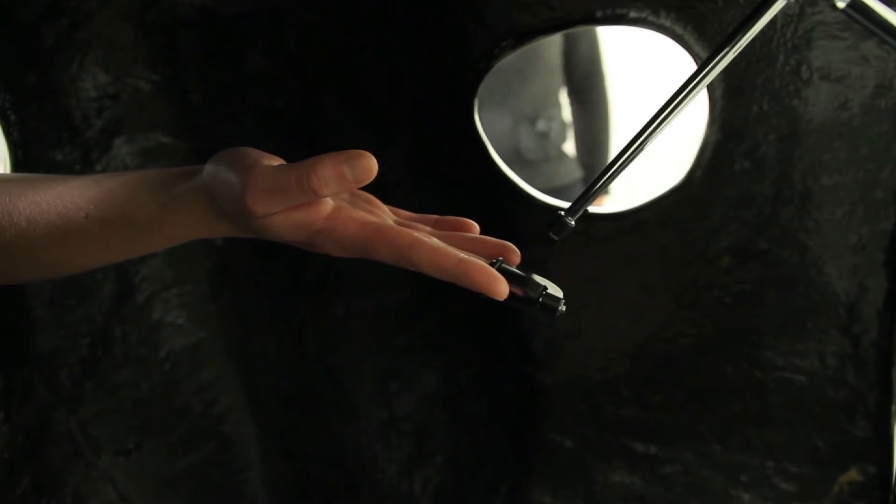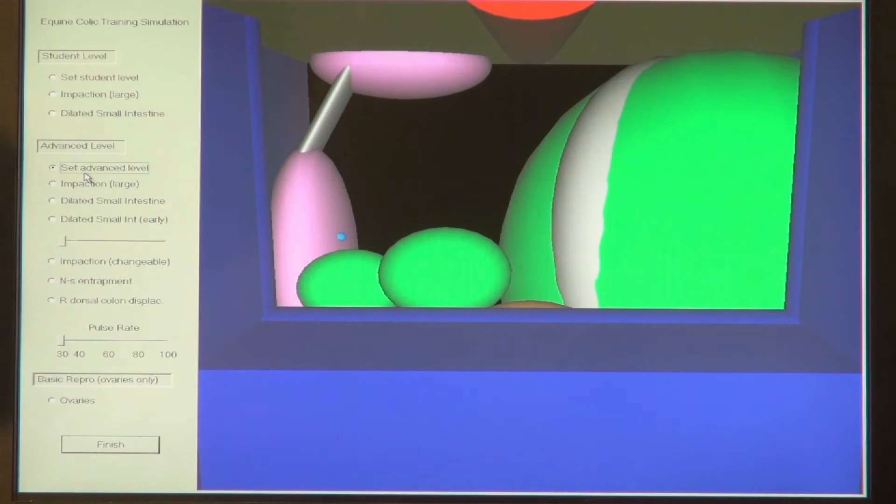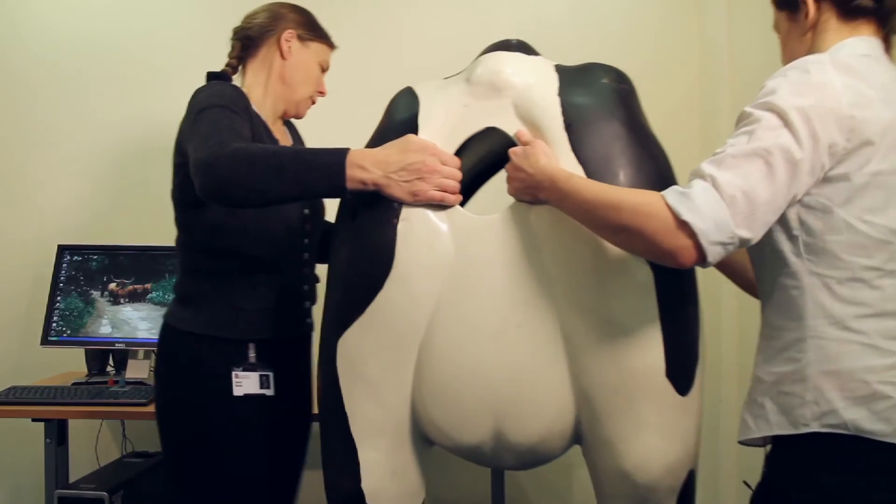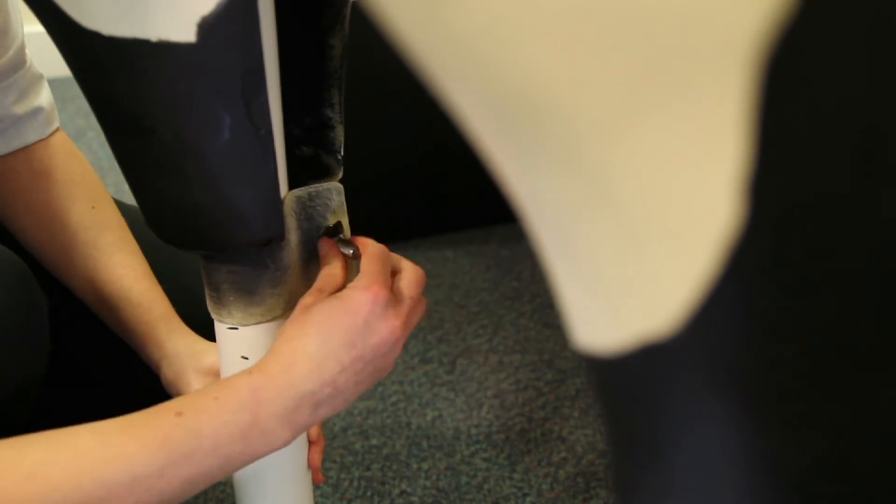Haptic force feedback technology allows interaction with a virtual bovine reproductive tract or virtual equine digestive tract positioned within a seemingly empty fibreglass model of the rear half of an animal. The same hardware is used for both systems.